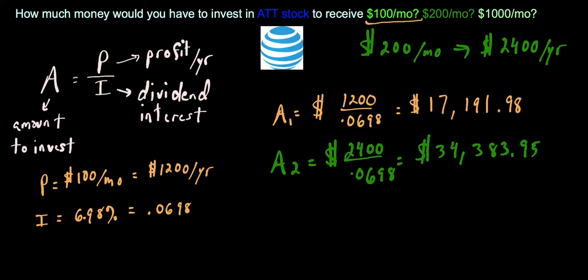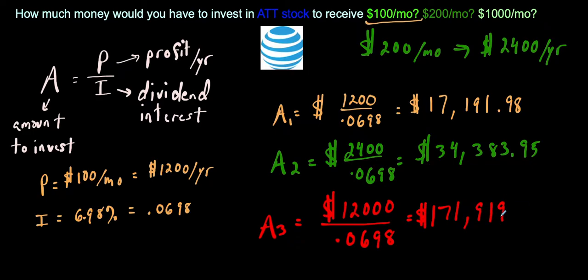And then for the last one, for the $1,000 per month, now we're interested in making $12,000 per year. If you just take 1,000 and multiply by 12, that's $12,000 for the year. And we're dividing that by 0.0698. So if you work this out, you would have $171,919.77.